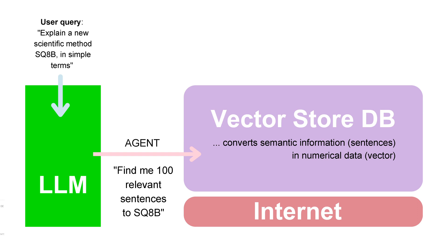In a vector store, it is very easy. We convert semantic information stored in sentences into numerical data stored in vectors. We can apply mathematical operations on vectors — we cannot apply mathematical operations on sentences. Now you know why we have vector stores.